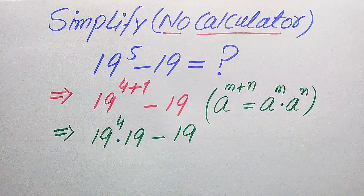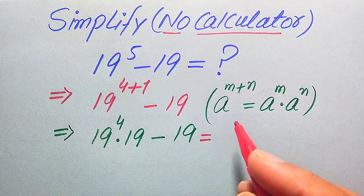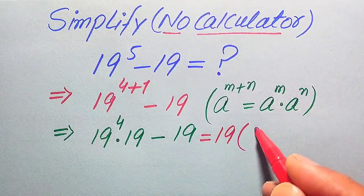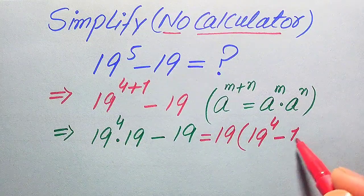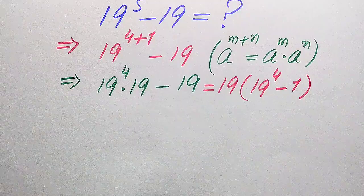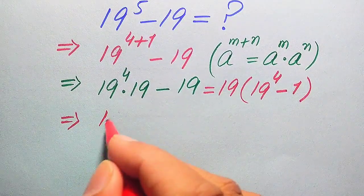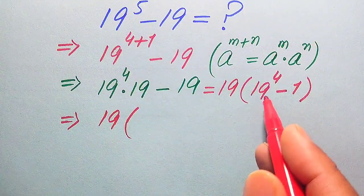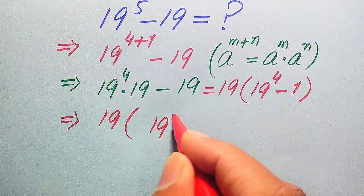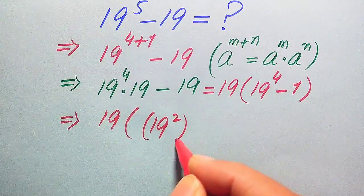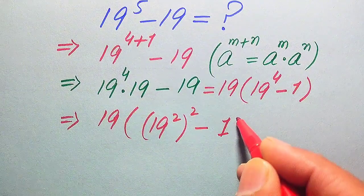In the next step, both terms involve 19, so we take 19 as a common factor. When we factor out 19, we get the remaining values as 19 to the power of 4 minus 1. We then rewrite this expression as 19 times (19 to the power of 4 minus 1). We write 19 to the power of 4 as (19²)² — that is, 19 squared, whole squared — minus 1.